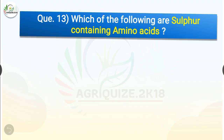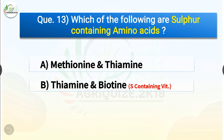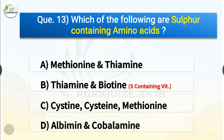Question number 13. Which of the following are sulfur-containing amino acids? The options are methionine and thymine, thymine and biotin, cysteine and methionine, or albumin and cobalamin. The correct answer is option C, cysteine and methionine. So cysteine and methionine are sulfur-containing amino acids.